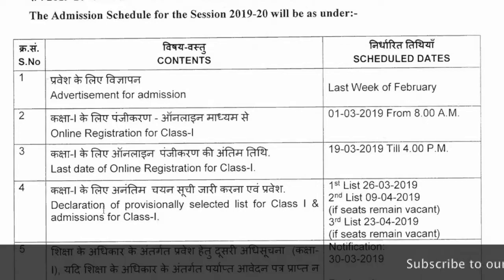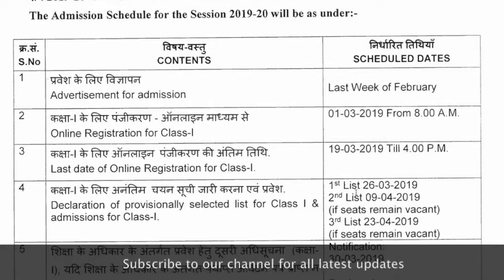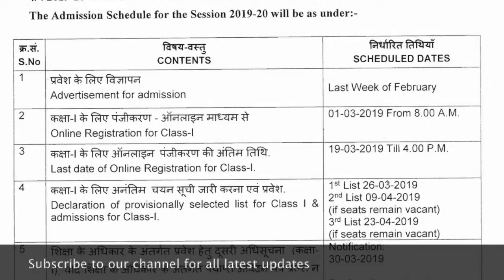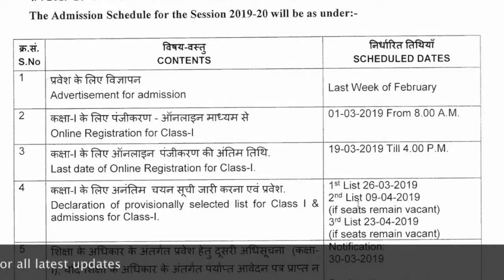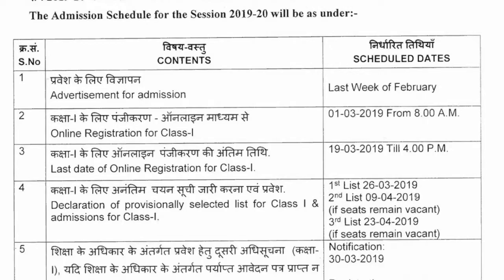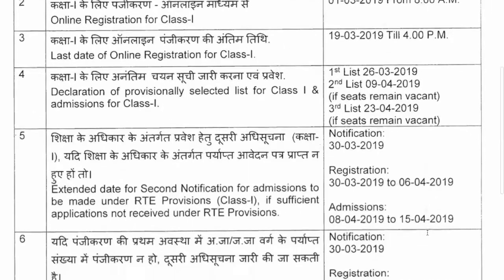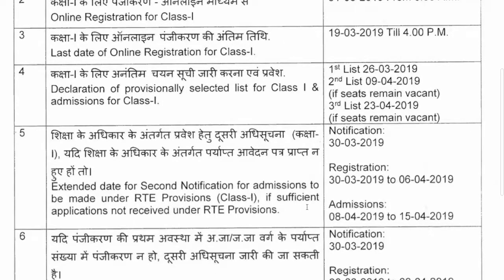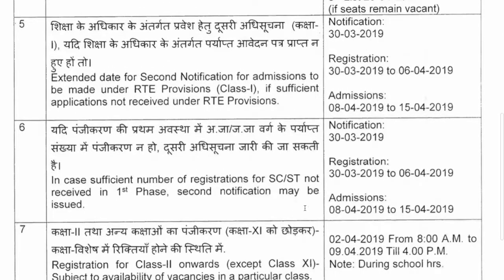Declaration of selected list for Class 1 and admission: 1st list on 26th March 2019, 2nd list on 9th April 2019. If seats remain vacant, 3rd list on 23rd April 2019. Declaration of list for Class 2 onwards: 12th April 2019.